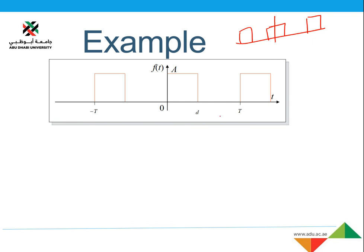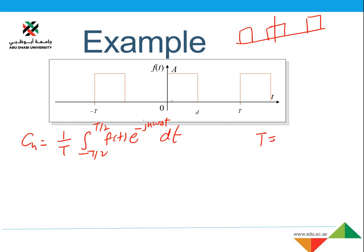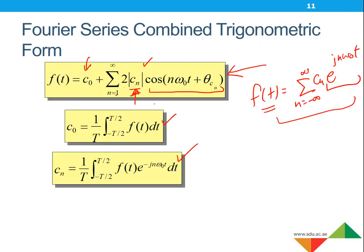Looking at the time periods, we know we have to calculate the coefficient values. For the coefficient value, we have to integrate from minus T over 2 to T over 2 of f(t) times e to the power minus j*n*omega_0*t dt. So we have to find the time period. This waveform repeats after time period T. We solve this in the same fashion as before to get our c_n coefficient value, then plug it in to get the combined trigonometric form.